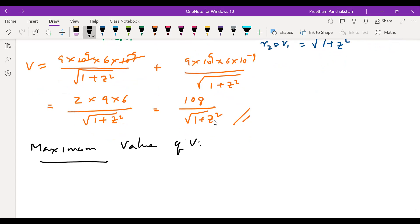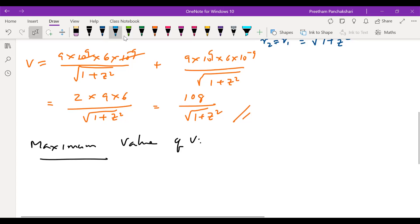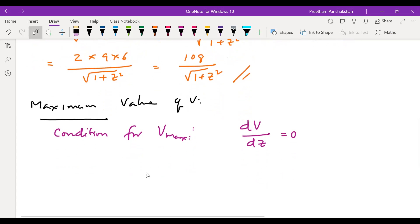Because V depends on z. So we have to find out for which value of z, V would be maximum. And we know that by differentiating V with respect to z and equating it to 0, we can find the condition for maximum. Condition for V_max is given by differentiation of the potential V, since it is a function of z, with respect to z and equating it to 0.